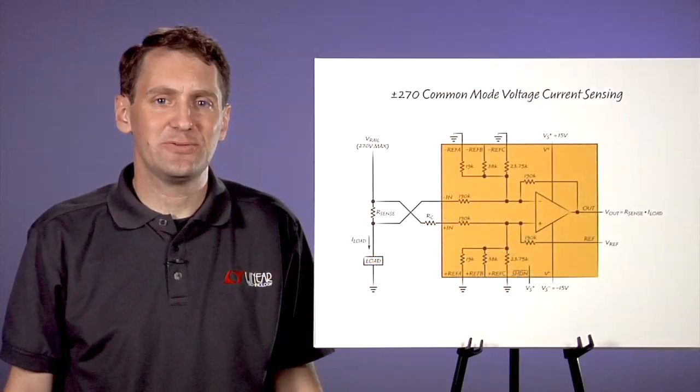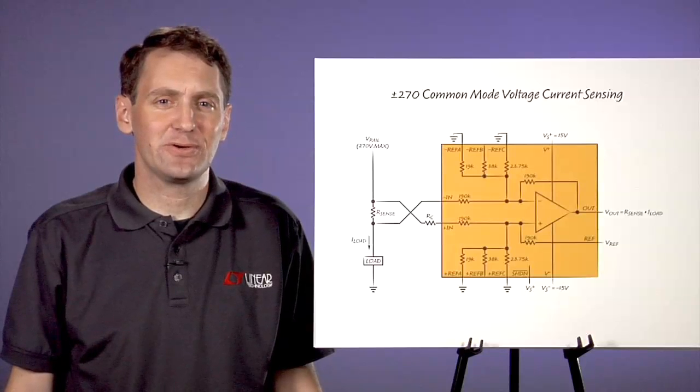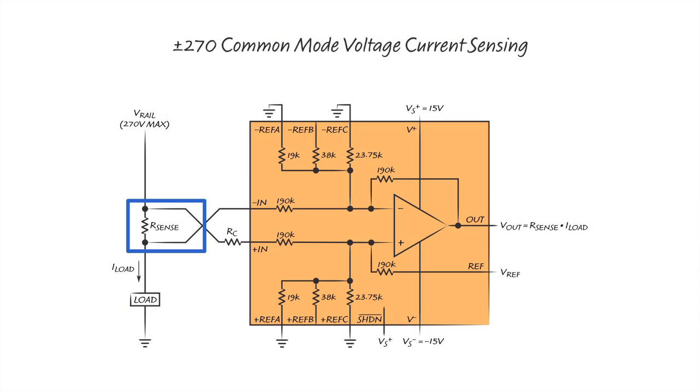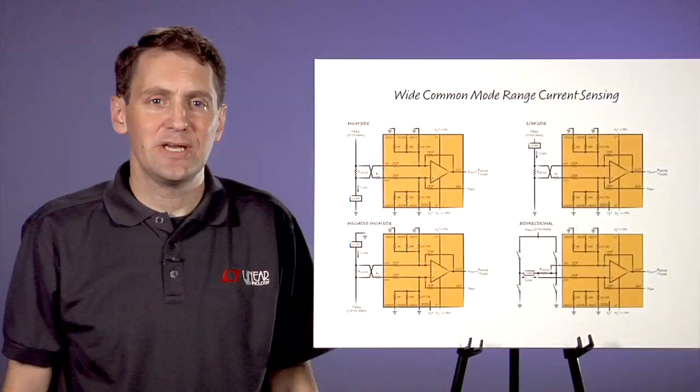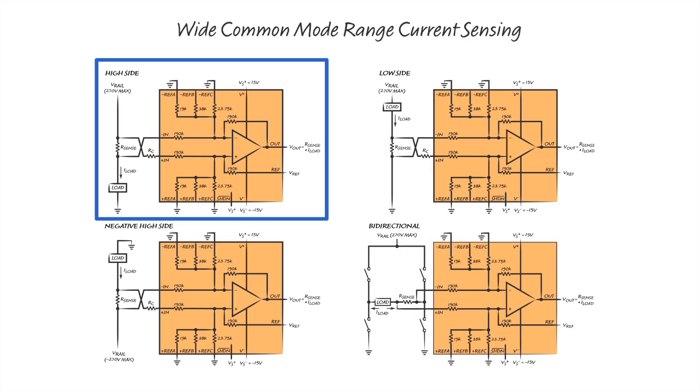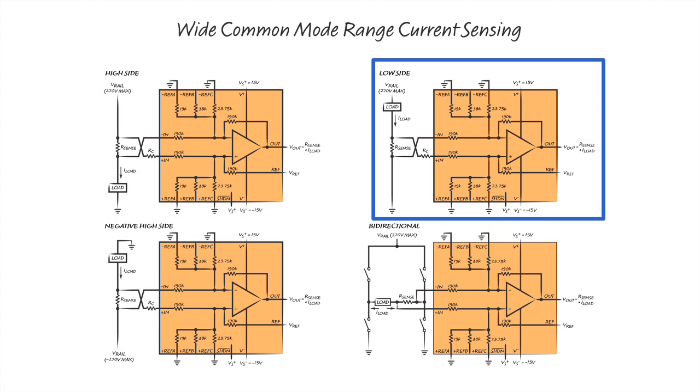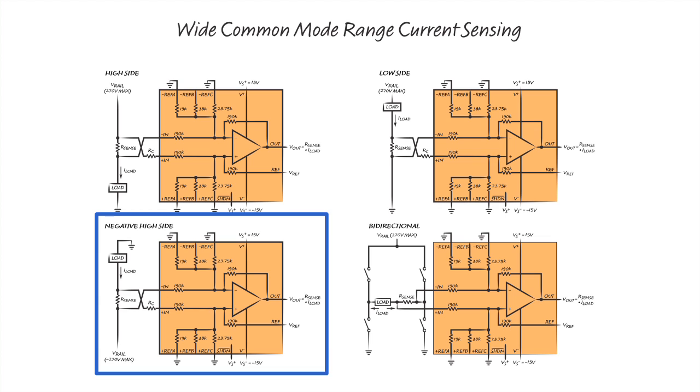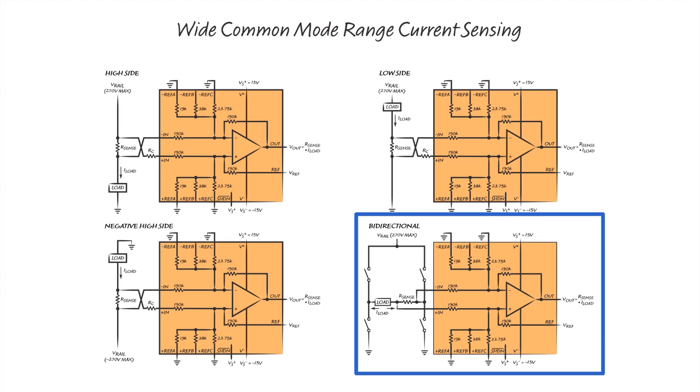The LT-6375 is exceptionally well suited for current sensing applications. It can be used to make a very accurate measurement of a current across a small sense resistor and directly drive an ADC. It works in a wide variety of current sensing applications including high-side current sensing, low-side current sensing, negative high-side current sensing, and bidirectional current sensing.